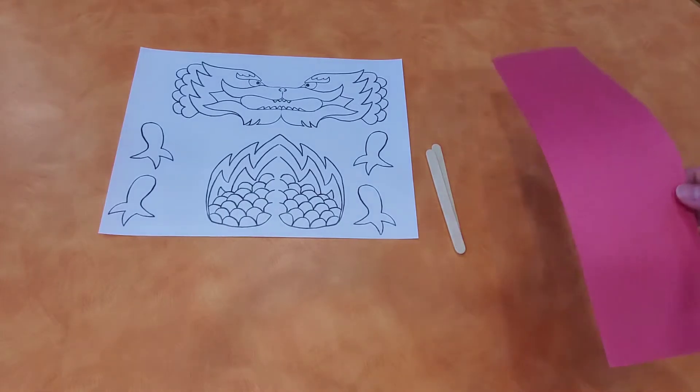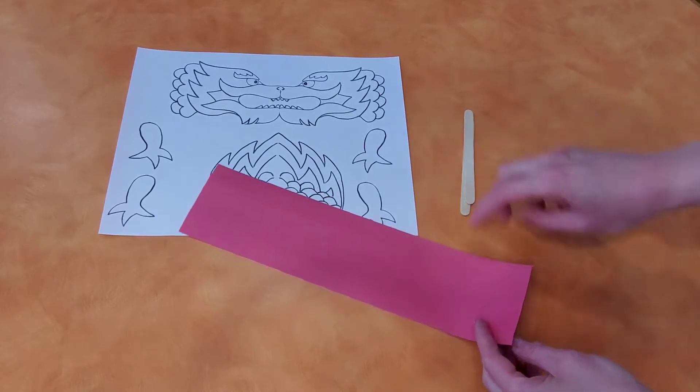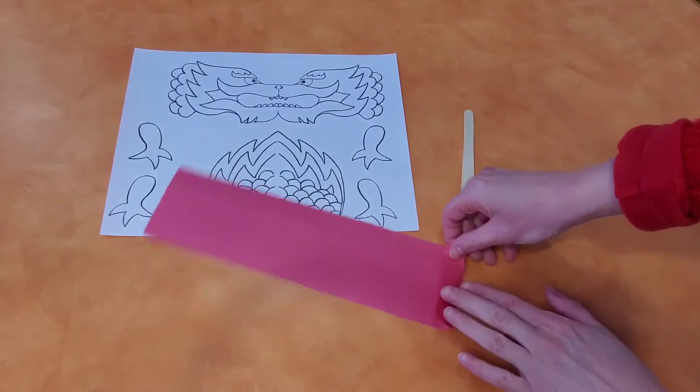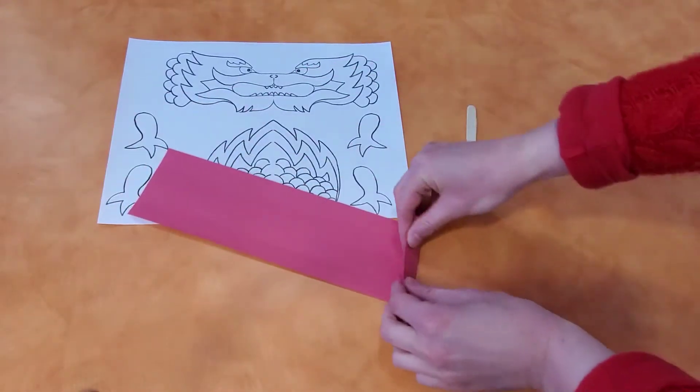So the first thing you're going to want to do is fold the body of the dragon like an accordion. So you fold it like that and then you just go back and forth.